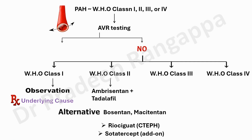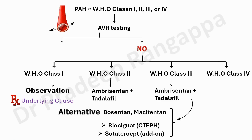If someone is in WHO class 3, which are typically the type of patients that come to ICU and are very symptomatic, again the suggestion is dual therapy — ambrisentan with tadalafil as the preferred choice, or a combination with bosentan. If it is CTEPH hypertension, riociguat is to be suggested. You have to use two drugs at optimal dosage.